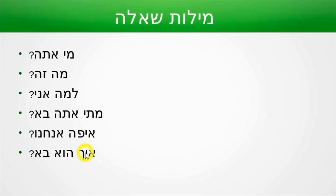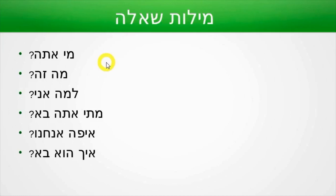Let's see how we can actually use all of this. Mi ata — mi means 'who,' ata means 'you.' Now, if you don't know this yet, the word 'are' is non-existent in Hebrew. 'I am,' 'you are,' and so on — we don't have those verb extensions. In Hebrew we simply say only the pronouns: ani, ata, and so on.